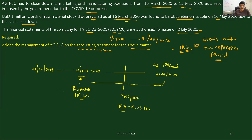So should we adjust the financial statements or not? Based on IAS 10, if any conditions existed — and this raw material was in existence as at the balance sheet date 31st March 2020 — then this condition was prevailing as at the balance sheet date. Therefore this 1 million has to be adjusted in the financial period, which means we need to make a provision. The raw material stock worth 1 million has become obsolete or non-usable due to the close down of the manufacturing plant.